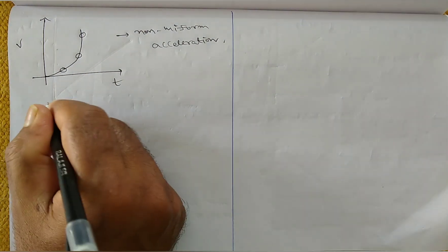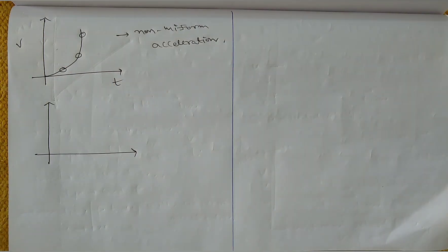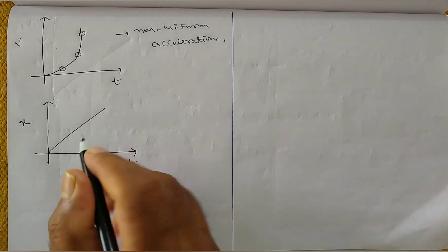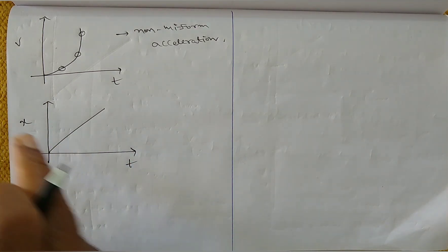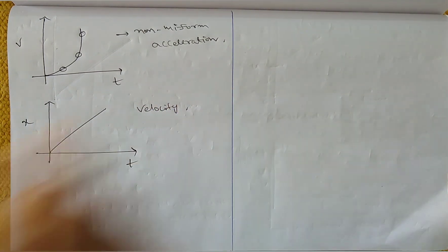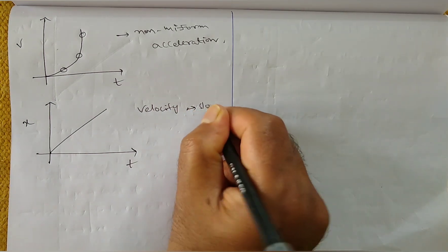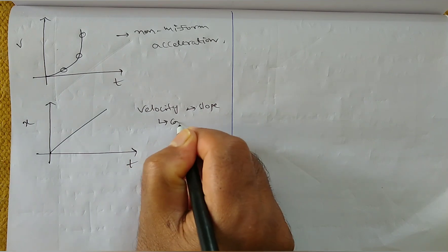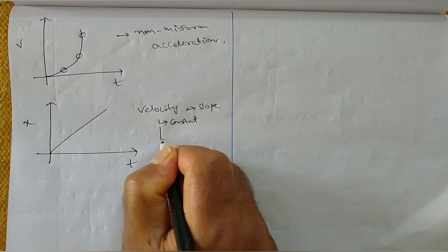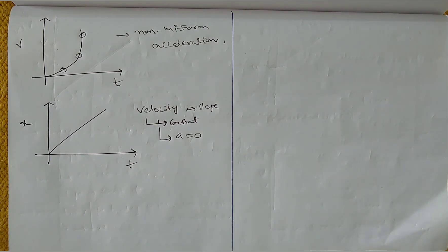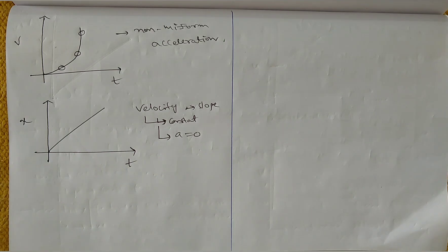Returning to the x-t graph: the slope of the x-t graph gives velocity. If the slope is constant, velocity is constant, and therefore acceleration is zero.